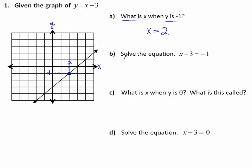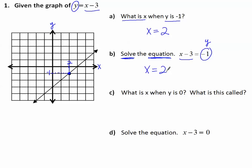Part B: Solve the equation x minus 3 equals negative 1. Notice we were given y equals x minus 3, so x minus 3 is the same expression. What's different is that y was replaced with negative 1. So this is essentially asking the same question as Part A. Using the graph, we go to where y is negative 1, go over to the line, and it corresponds with x equals 2. That's solving the equation.